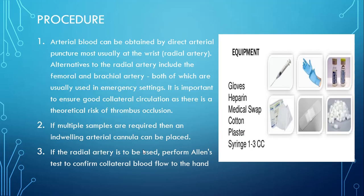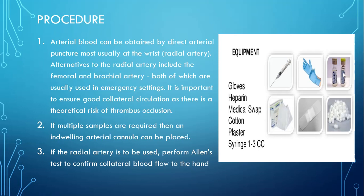Now the procedure. Before starting, let's discuss the equipment we need for ABGs. First, we need a 1 to 3 cc syringe to collect the blood sample. We need gloves for the person taking the sample, and we need heparin — an anticoagulant to prevent the blood sample from clotting. Heparinized syringes are also available and can be used.